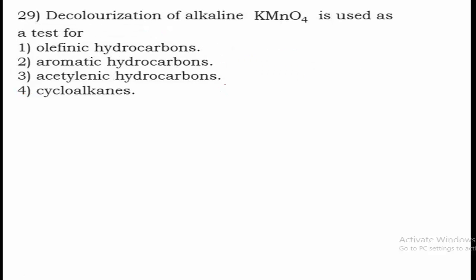Question 29: Decolorization of alkaline KMnO4 is used as a test for which compound? When we add olefinic hydrocarbons (alkenes), the decolorization of alkaline KMnO4 takes place. Hence option 1 is the right answer.